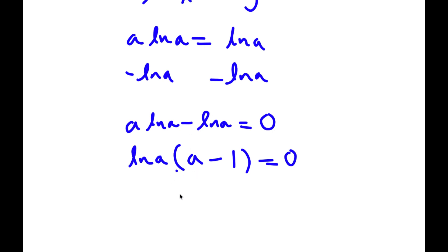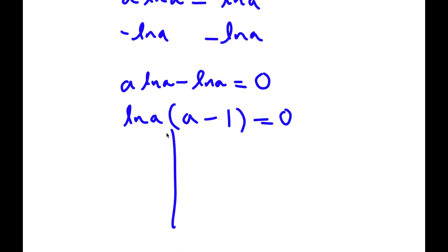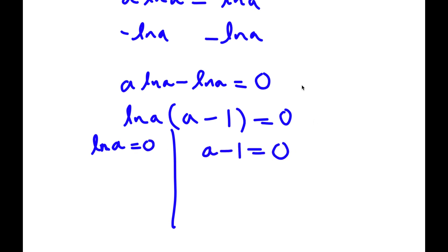If I factor out ln a, I get ln a times (a minus one) is equal to zero. This gives me two equations: ln a is equal to zero, and a minus one is equal to zero.